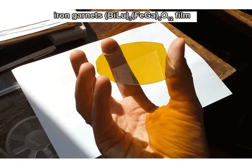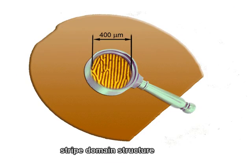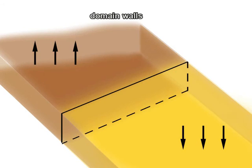The iron garnet film, due to the in-plane anisotropy, hosts the striped domain structure. The domains are separated by domain walls.